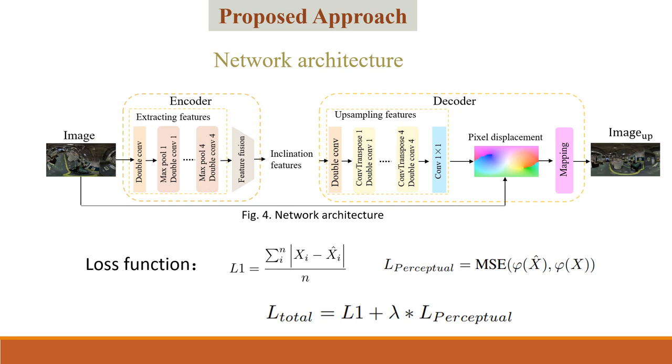We employ an encoder-decoder architecture to accomplish this task. In the encoder, a series of down-sampling operations are applied to obtain features. Subsequently, a feature fusion operation is utilized to derive the inclination features, also known as motion features. In the decoder, the inclination features pass through a feature upsampling module to estimate pixel displacement. The obtained pixel displacement is then mapped with the non-upright image to generate the corrected upright image, and we use L1 loss and perceptual loss to regularize our network.